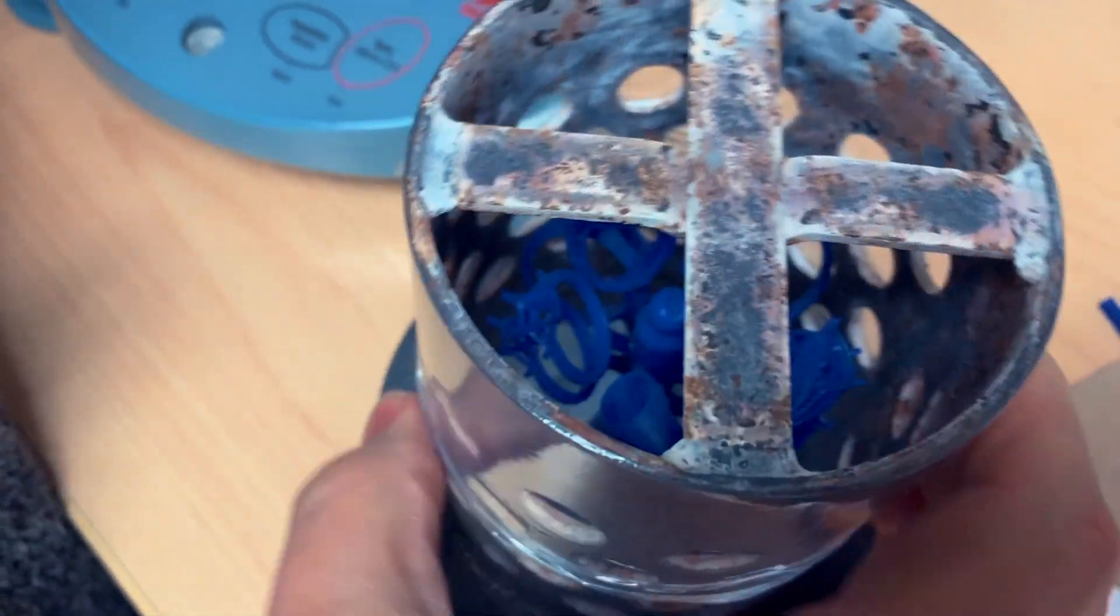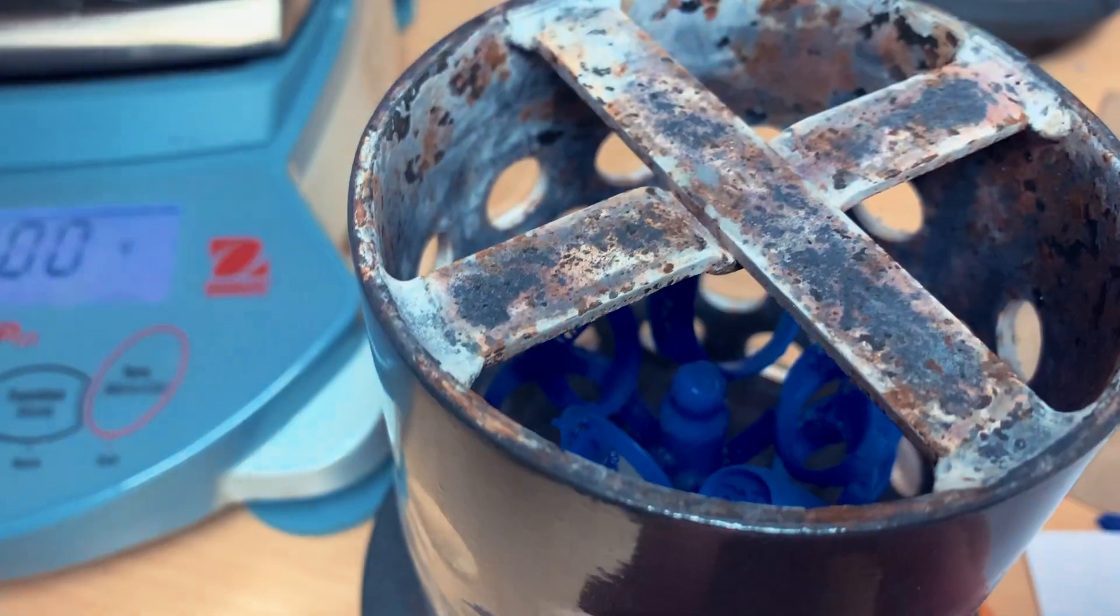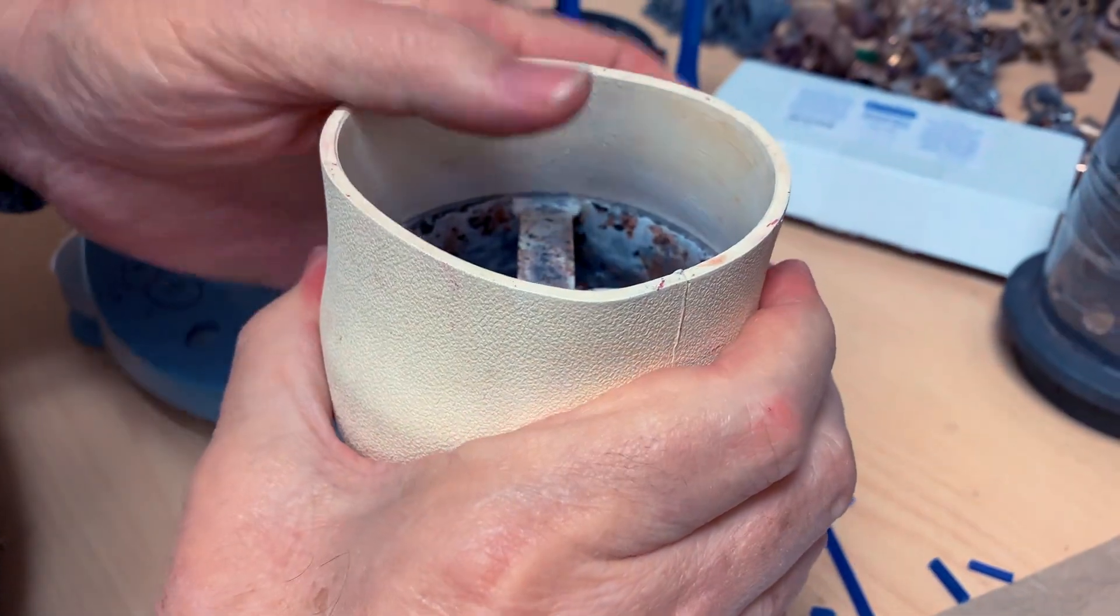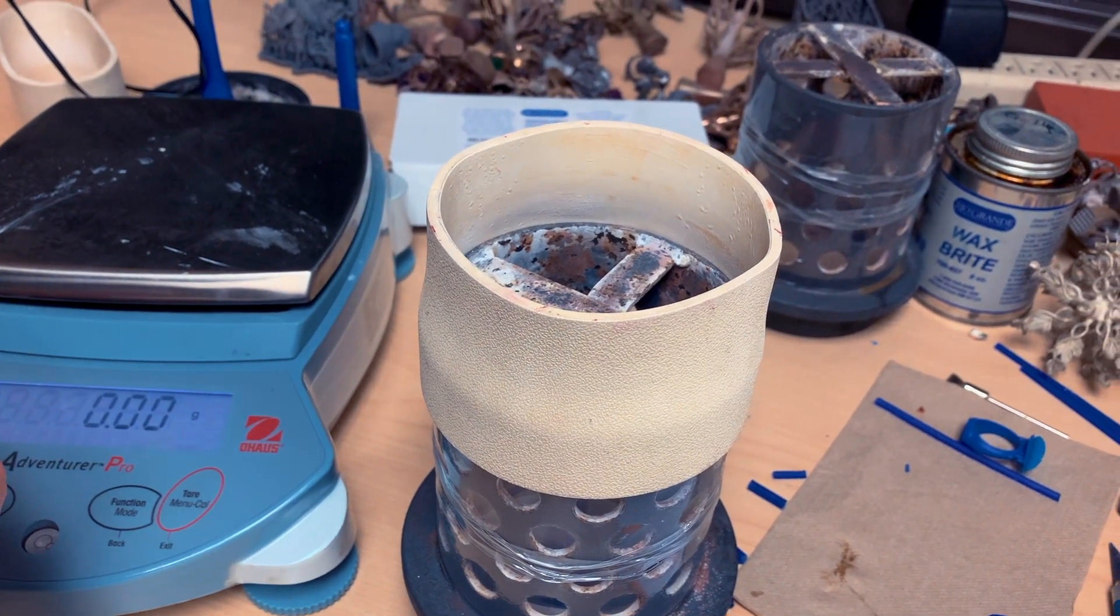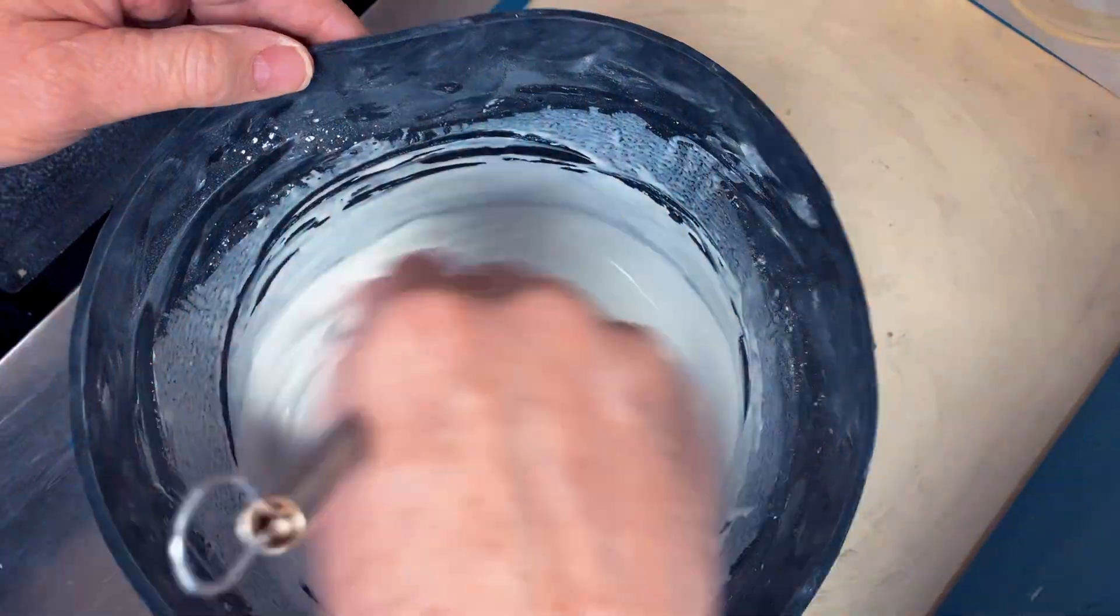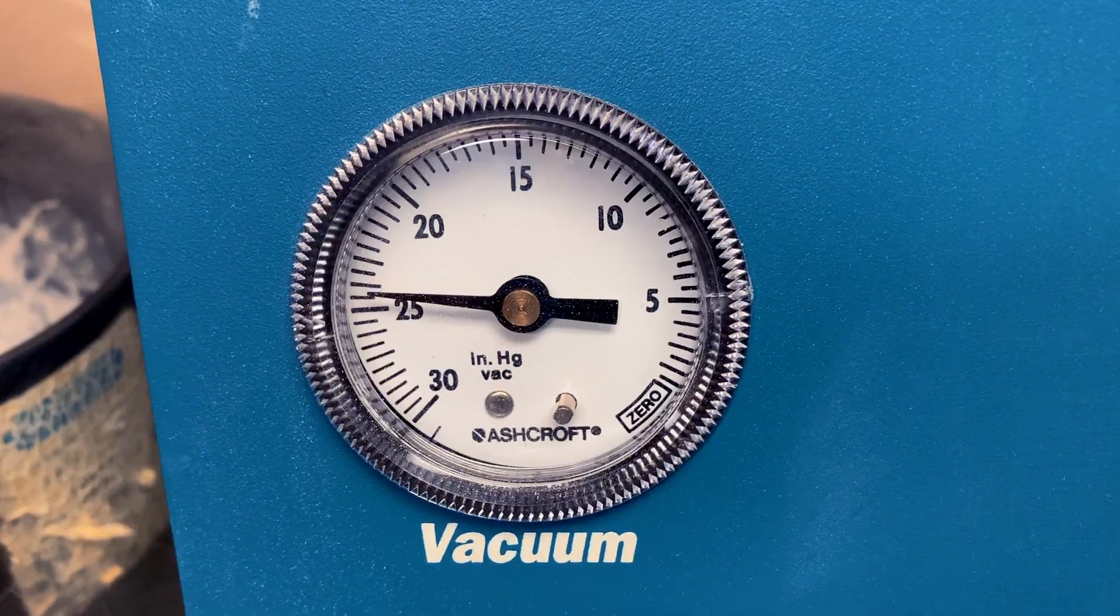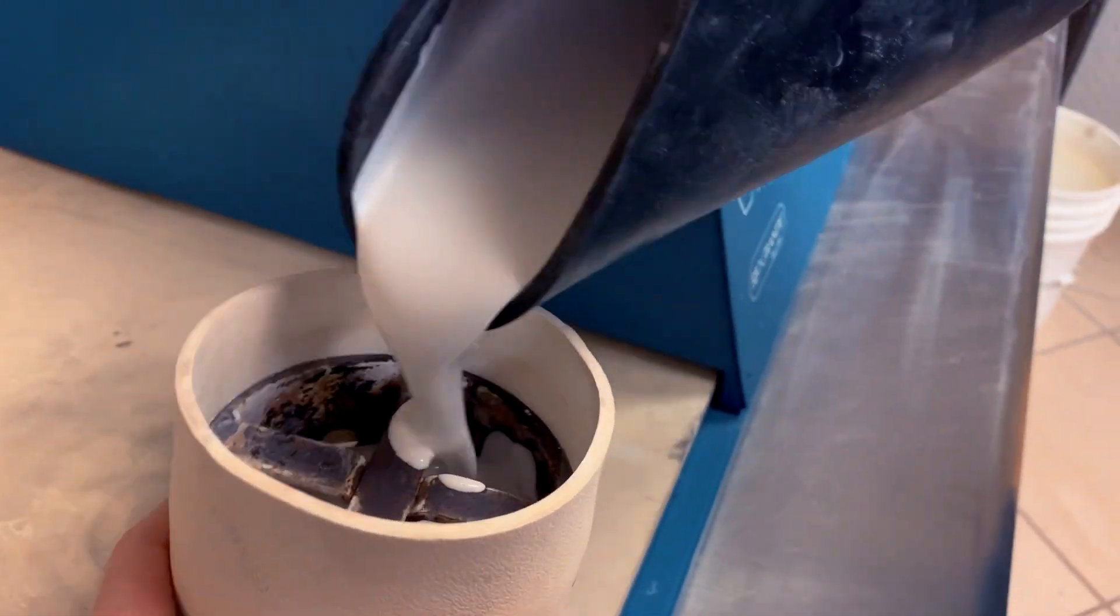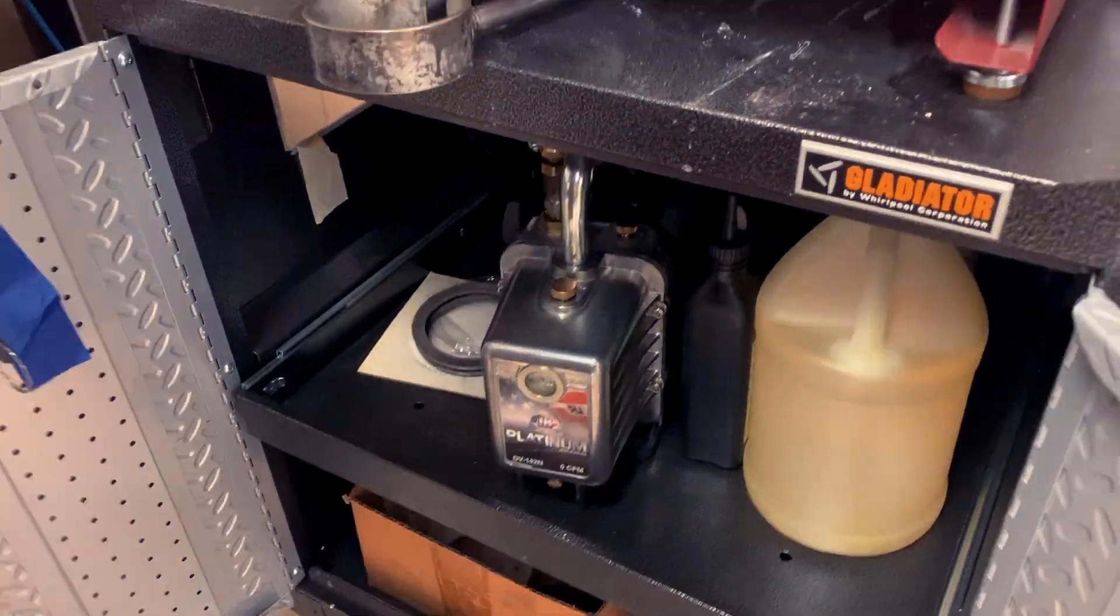And then I'm just going to add this extender onto the top. That way, when we mix up the investment and it bubbles up, it won't overflow, and it'll all flow back down in. And we're ready to go invest.